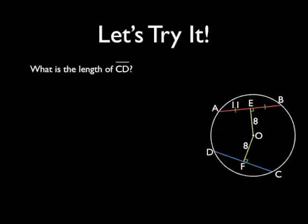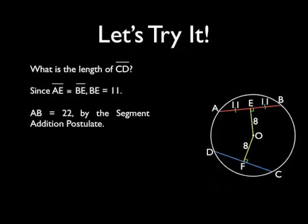So let's try it. What is the length of segment CD? Well you will notice that segment OE bisects segment AB, and so segment BE will be the same as segment AB. Now that tells us that segment AB is 22 by the segment addition postulate.